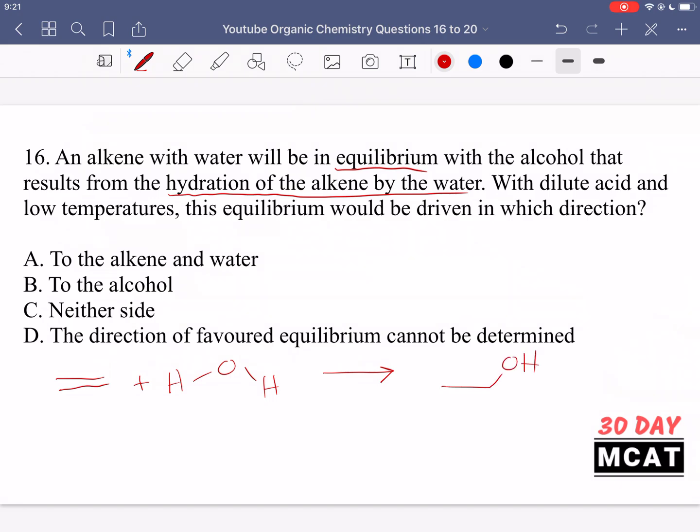The way that this takes place is the alkene will come and attack a hydrogen and then later on it'll be a carbocation and then the oxygen of the water will attack the carbocation to get this alcohol. So the alkene is now hydrated. That's the hydration reaction.